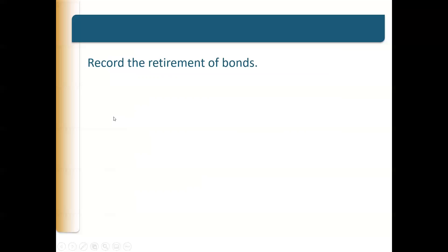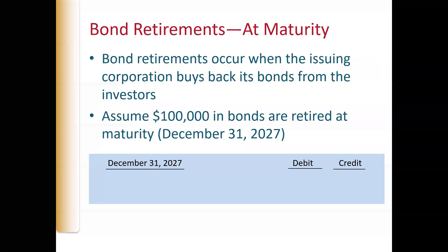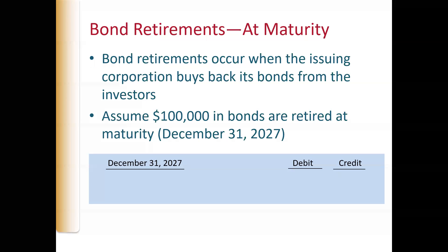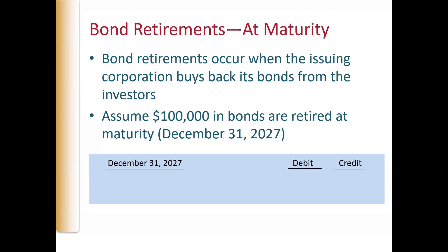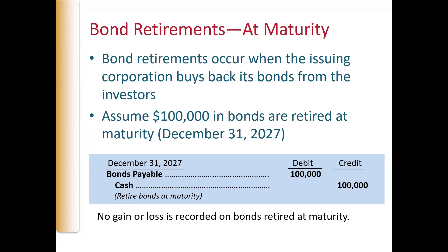This leads us to where we start today: retiring bonds. Bond retirements occur when the issuing corporation buys back the bonds. If we assume $100,000 in bonds are going to be retired at maturity, that's really easy — there's no gain, no loss. We held them to maturity. We spend the $100,000 to buy them back, we zero out our debt, we credit our cash. There's no gain or loss recorded.